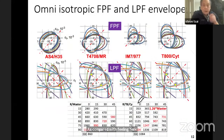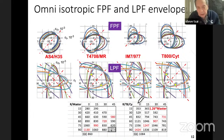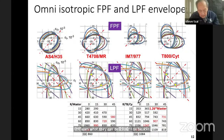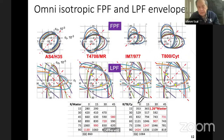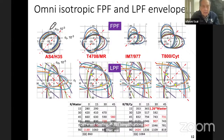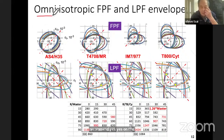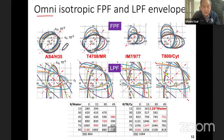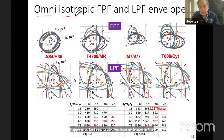What we're trying to do is to learn what failure criteria can do so that we can understand the material behavior and devise a testing procedure for design purposes. One simplification we recommend is to use the omni-envelope — the envelope in strength space of all ply orientations. The inner core of that space happens to be isotropic because it's no longer dependent on the ply orientations.